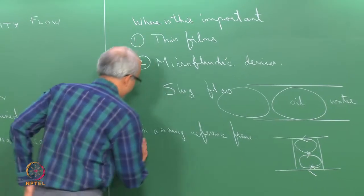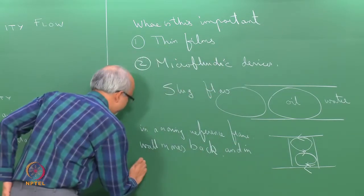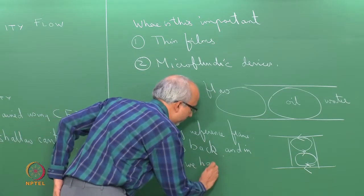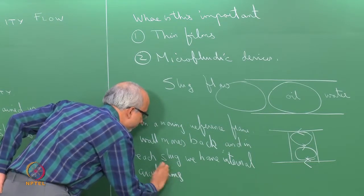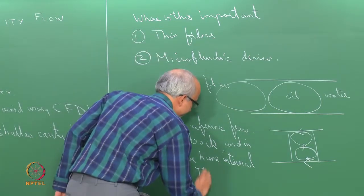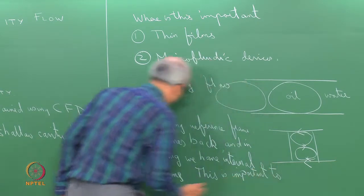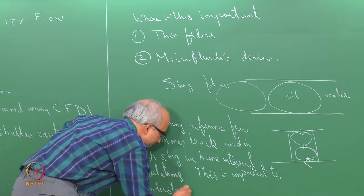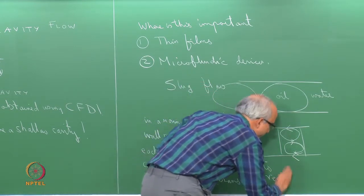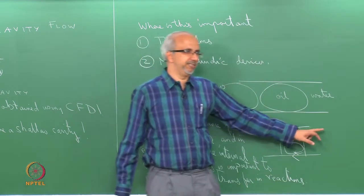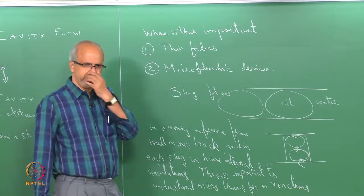The idea is that in a moving reference frame, the wall moves back, and in each slug we have internal circulations. This is important to understand for mass transfer, for example in reactions. Typically, there will be some species in one phase and another species in the other phase; both have to come together to one phase for the reaction to occur, and this convection is going to be decisive.